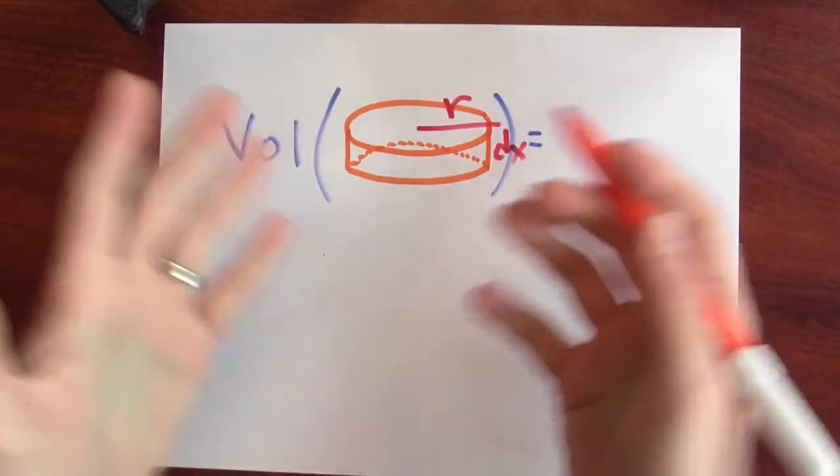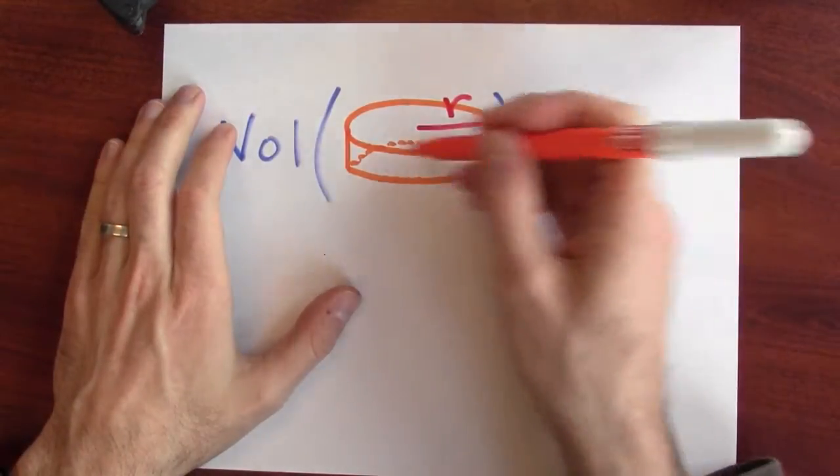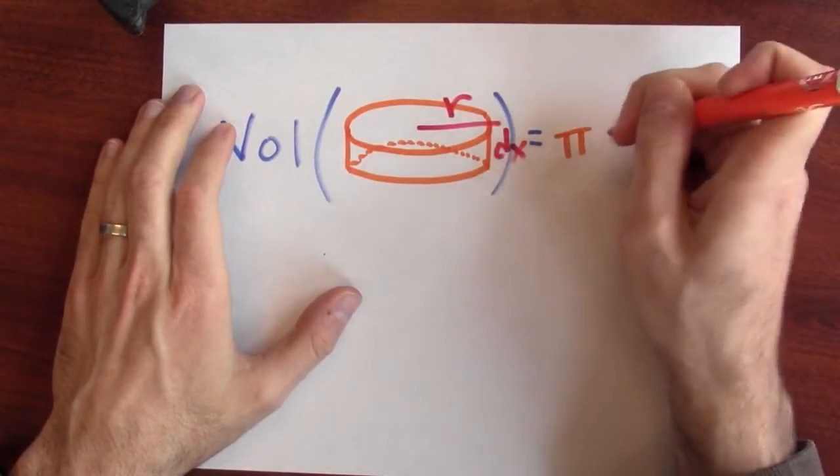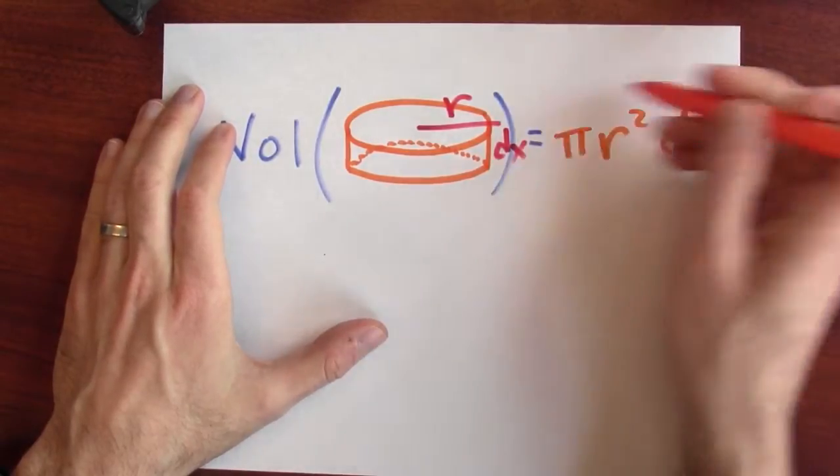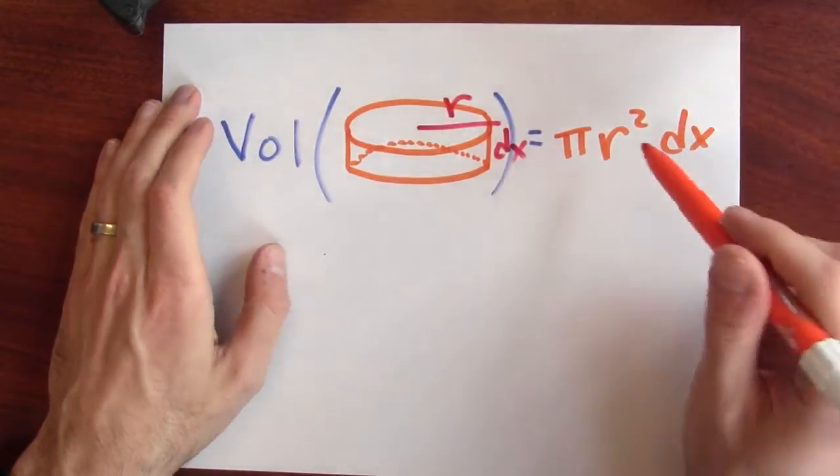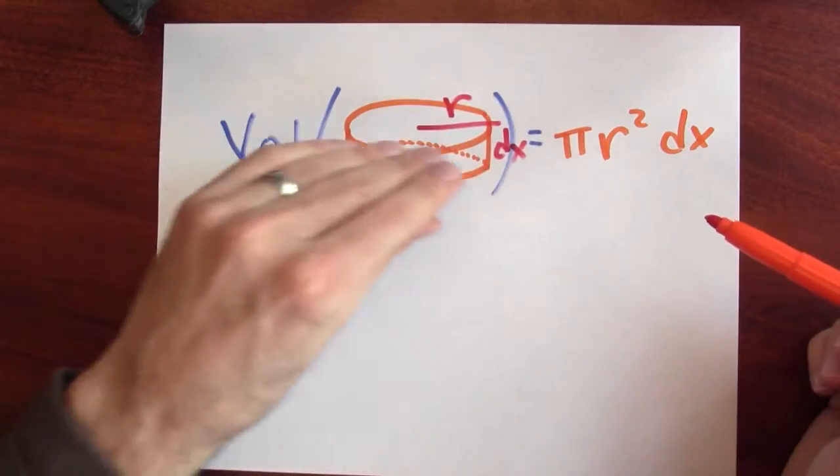And in that case, the volume of this cylinder is the area of the top. It's pi r squared times its height, which is dx. So this here will be our formula for the volume of one of these thin cylinders. And once again, we're seeing the importance of the differentials. We're using the differentials to write down an equation for the volume of the thin cylinder.